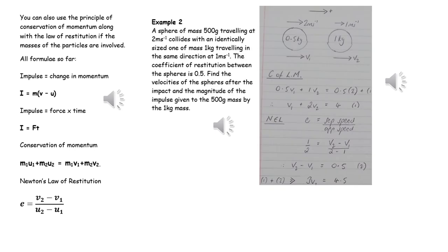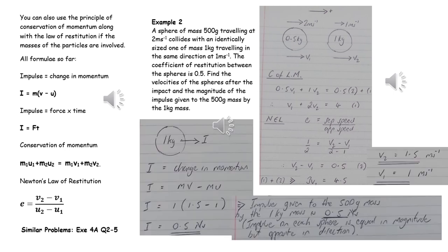So in example 2 we can use Newton's experimental law and conservation of linear momentum to create two equations with the two unknowns v1 and v2, and then solve them simultaneously to find the values of v1 and v2. And then finally we can find the impulse acting on the body by considering the change in momentum of the one kilogram mass, and that gives us that the impulse is 0.5 Newton seconds. Remember that the impulse on both objects is always exactly the same magnitude just opposite in direction.